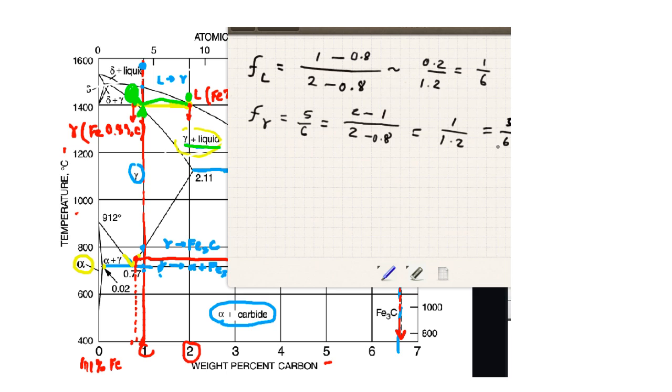or roughly, or exactly 5 sixths. So the fraction of gamma is 5 sixths. The fraction of liquid is 1 sixth. And you can use this rule anytime you have a two-phase region. And you can also use it in an isothermal transformation for three phases. We'll do that in another problem.